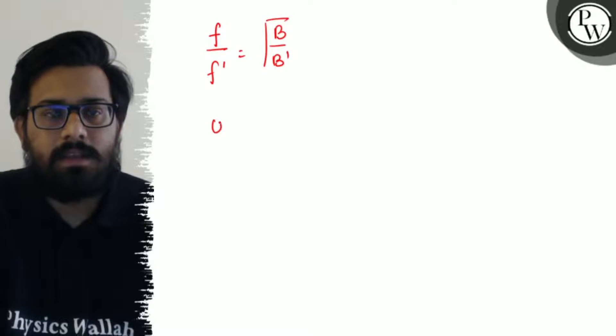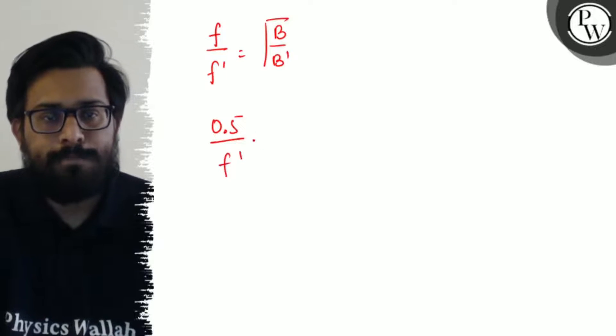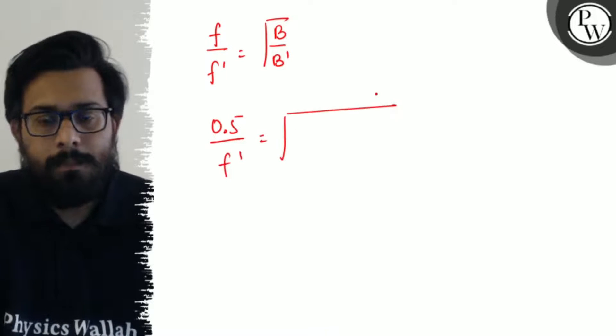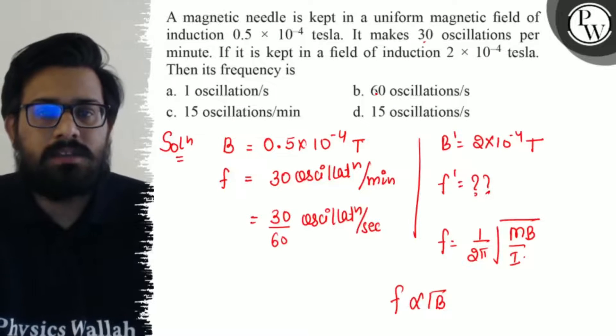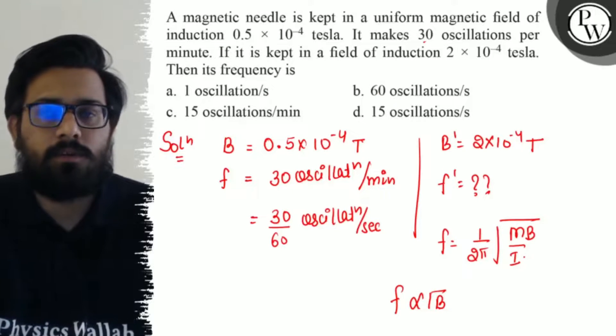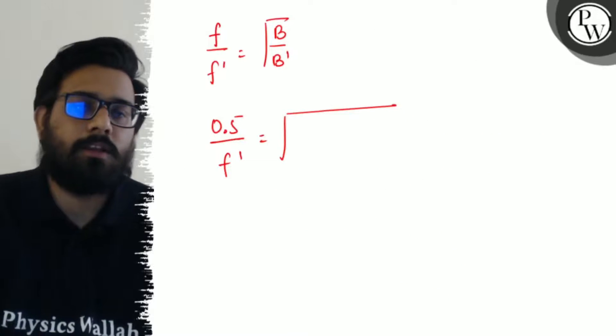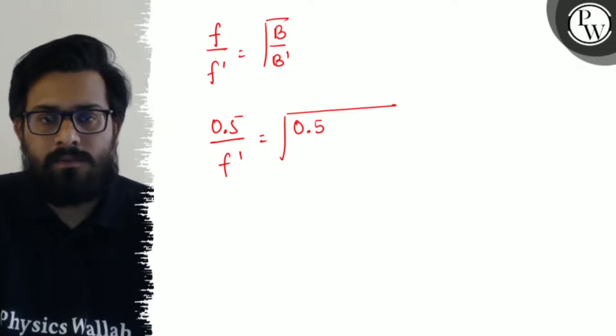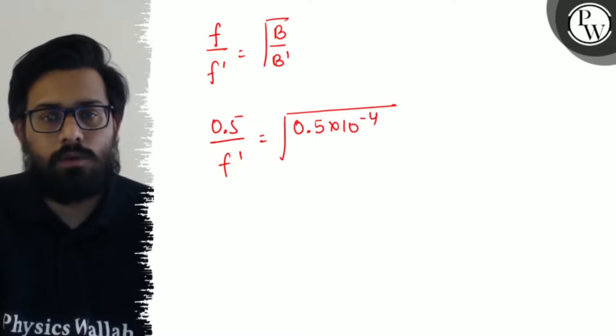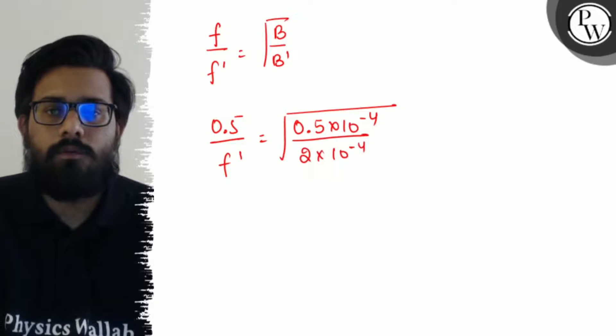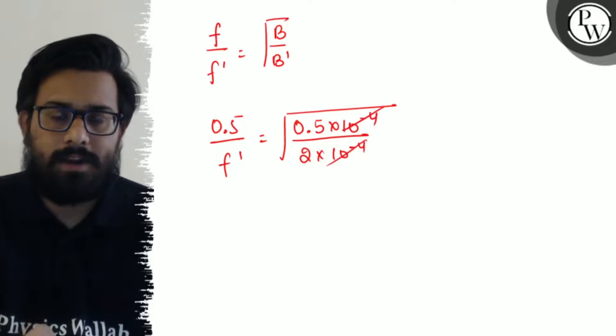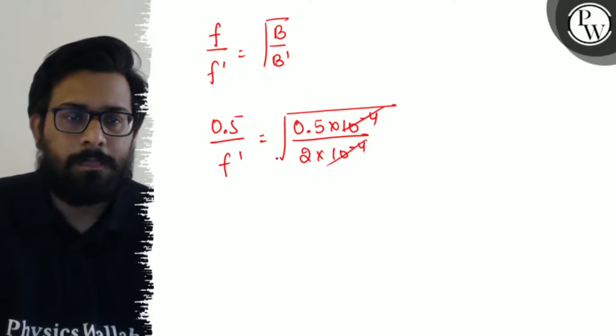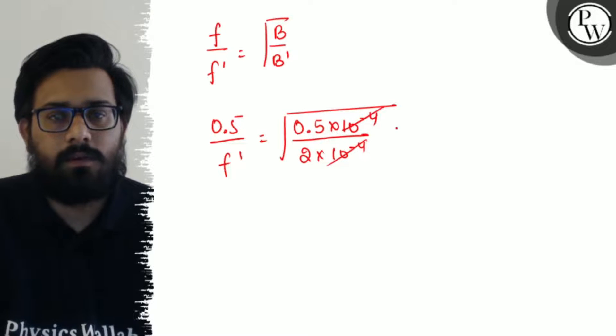That is, 0.5/f' = √[(0.5 × 10⁻⁴)/(2 × 10⁻⁴)]. In the first case the magnetic field was 0.5 × 10⁻⁴, and in the second case it was 2 × 10⁻⁴. So we have 0.5 × 10⁻⁴ divided by 2 × 10⁻⁴.